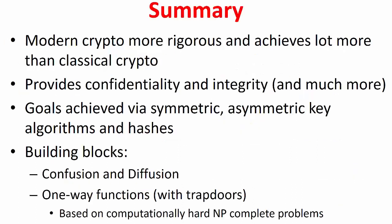To summarize: modern cryptography is far more rigorous and can achieve much more than classical cryptography. It provides confidentiality, integrity, anonymity, e-voting, digital cash, and more — via symmetric key algorithms, asymmetric key algorithms, and hashes. The underlying mechanisms are confusion and diffusion for symmetric key algorithms, and one-way functions for asymmetric key algorithms and hashes. These one-way functions are based on computationally hard NP-complete problems where the forward function is polynomial, but inversion is non-polynomial — unless you have the trapdoor key, in which case it is polynomial.